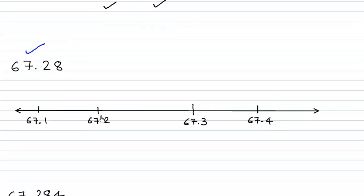So this is the first one, this is the second, this is the third, fourth, fifth, sixth, seven, eight, nine and this itself is the tenth. So 67.28 will lie on that eighth part after 67.2.